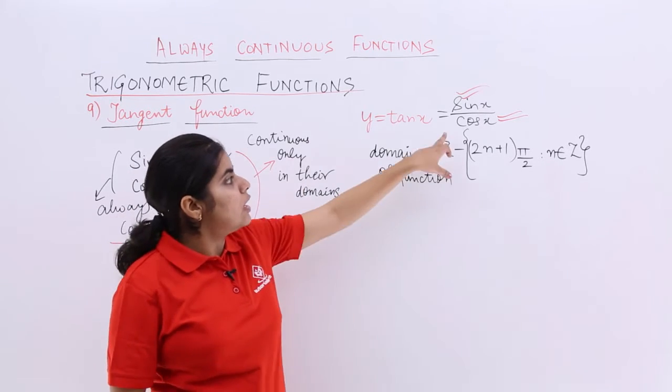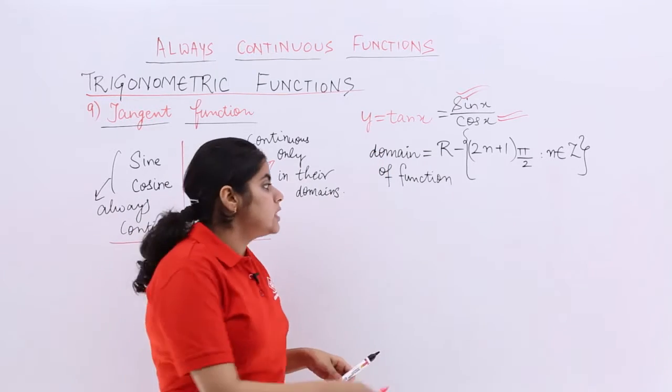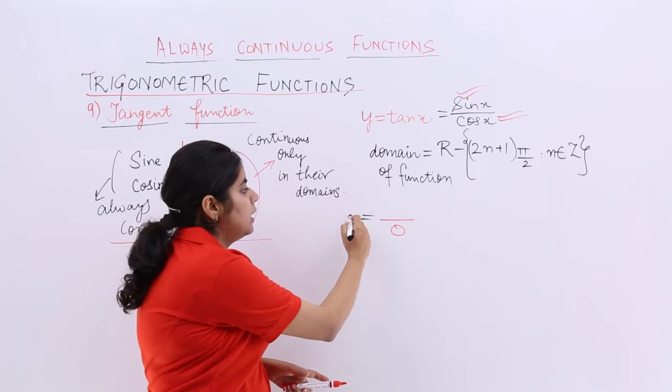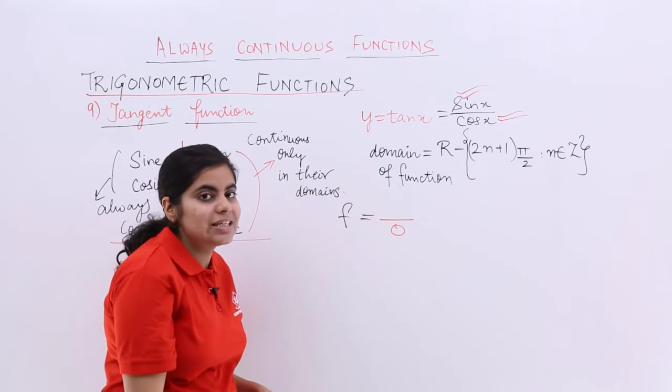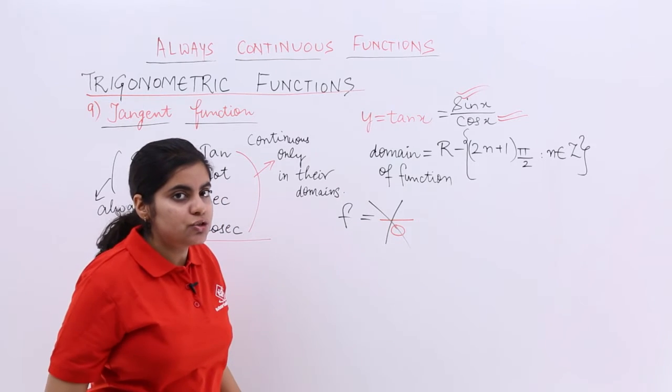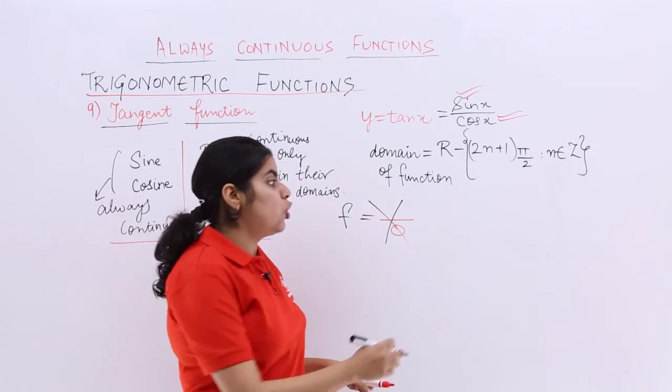But when cos is in denominator, things change. Because we do not want the denominator to be 0. If the denominator is 0, it is not defined. So, what I need to do is, I need to check when is cos 0. When is cos 0?